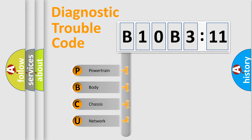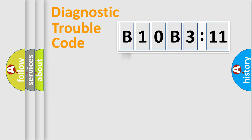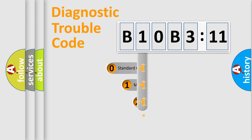We divide the electric system of automobile into four basic units: powertrain, body, chassis, and network. This distribution is defined in the first character code.